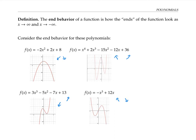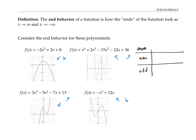If you study these examples, you'll notice a relationship between the degree, the leading coefficient, and the end behavior. These four types of end behavior are determined by whether the degree is even or odd, and by whether the leading coefficient is positive or negative. When the degree is even and the leading coefficient is positive, we have end behavior rising on both sides. When the degree is even and the leading coefficient is negative, we have end behavior falling on both sides.